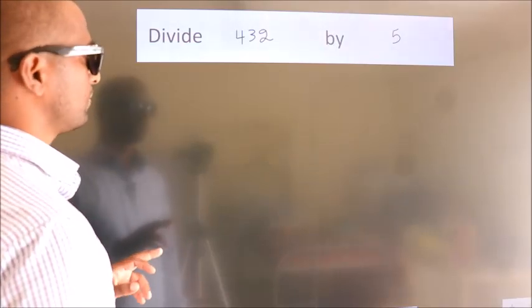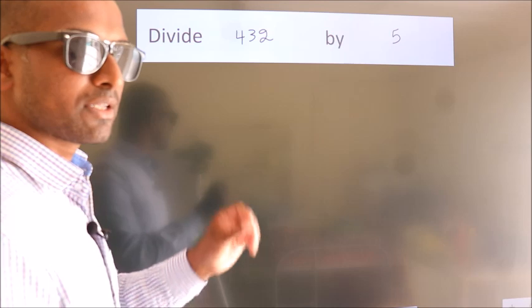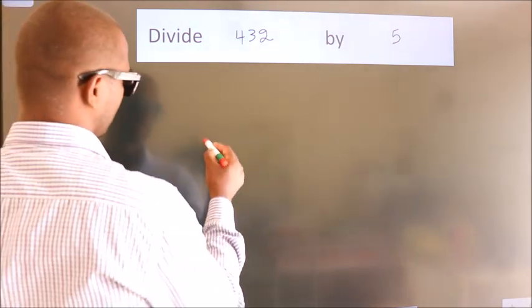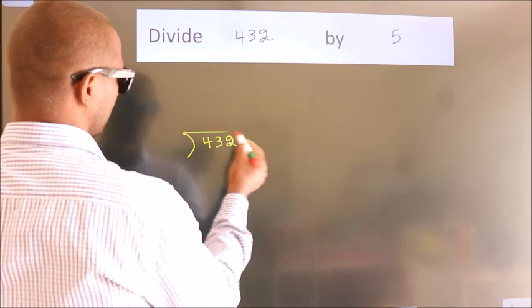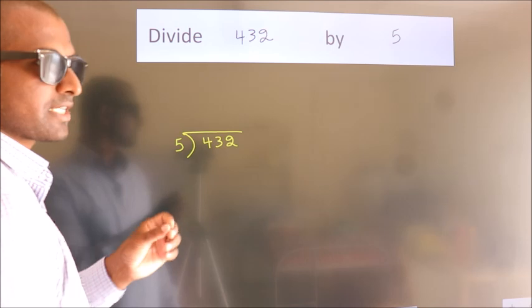Divide 432 by 5. To do this division, we should frame it in this way. 432 here, 5 here. This is your step 1.